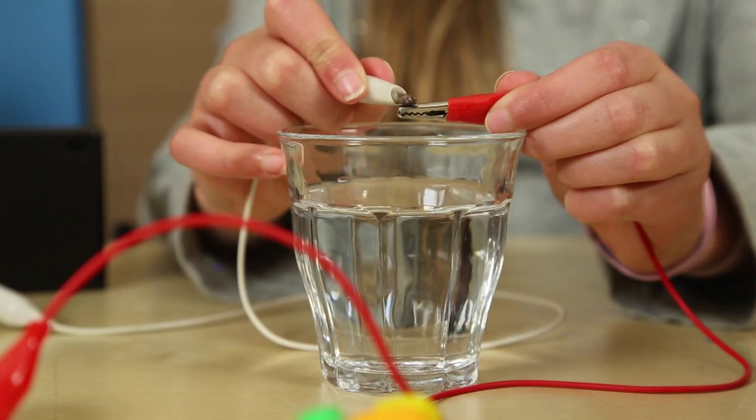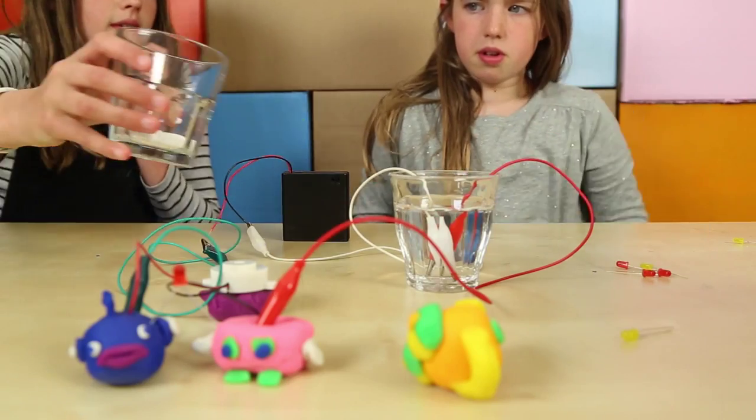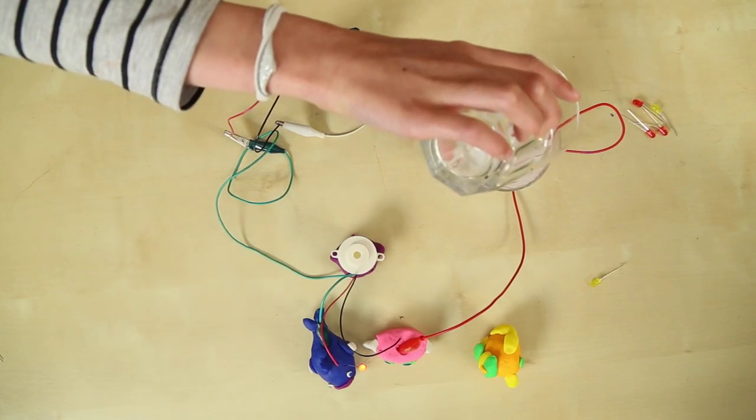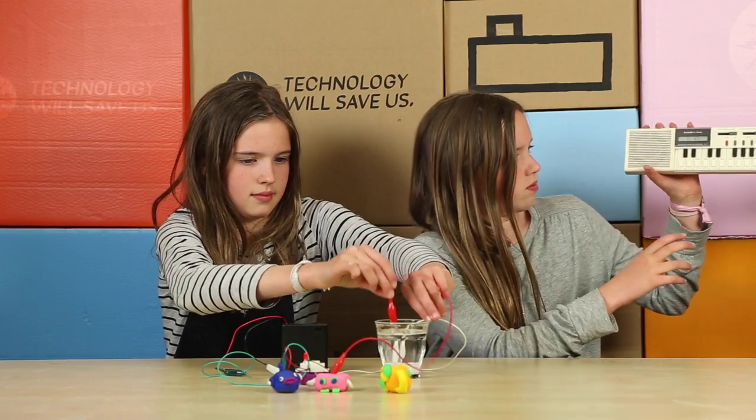Put both crocodile heads into the glass of distilled water. The LED should not light and the buzzer should not buzz. Take a teaspoon of table salt and pour into a glass of distilled water. The light should now turn on. This is why we put salt in the electrode dough.